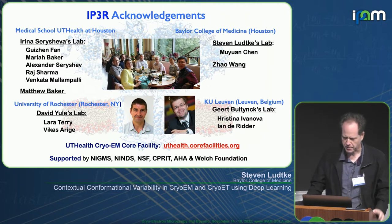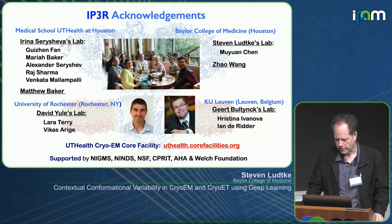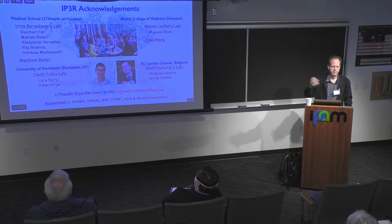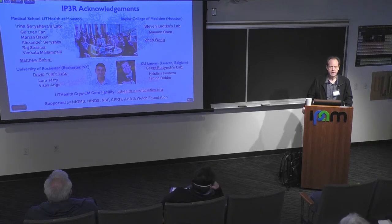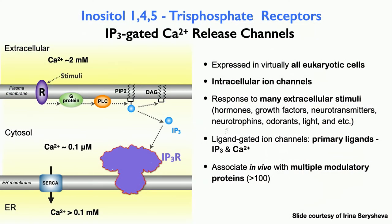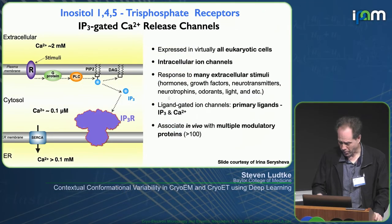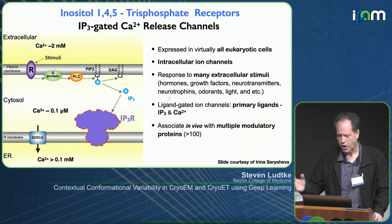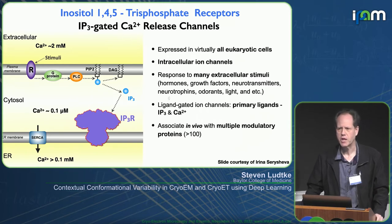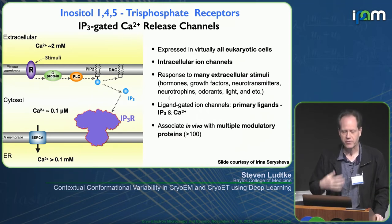The next bigger example is the IP3 receptor, a calcium channel that sits in the endoplasmic reticulum and lets calcium out of ER stores at appropriate moments. This is a large collaboration — Irina Sarasheva's group at UT Health is the lead. The IP3 receptor is pretty much everywhere in eukaryotic cells, with specific forms used in specific cell types. It responds to over 100 known modulatory ligands — 100 different molecules which, if present, will impact how this channel releases calcium, all in a very precisely controlled way.